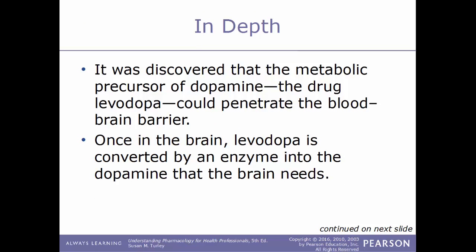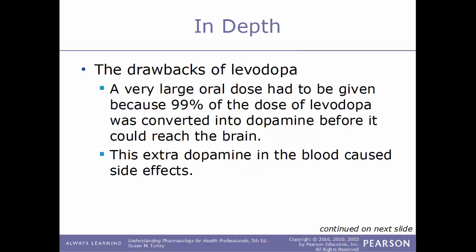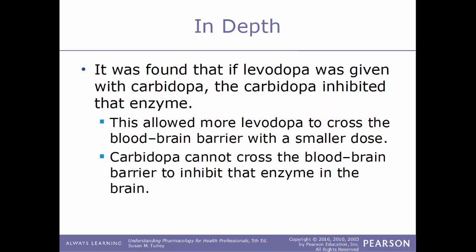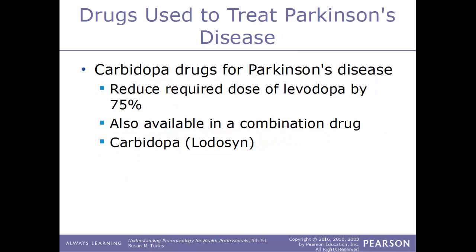It was discovered that levodopa, the metabolic precursor of dopamine, can penetrate the blood-brain barrier. Once in the brain, levodopa is converted by an enzyme into dopamine. However, a very large oral dose was required because 99% of levodopa was converted into dopamine before reaching the brain, causing side effects. When levodopa is given with carbidopa, carbidopa inhibits that enzyme in the blood, allowing more levodopa to cross the blood-brain barrier with a much smaller dose. Carbidopa cannot cross the blood-brain barrier, so it reduced the required dose of levodopa by 75%. Carbidopa is sold under the brand name Lodosyn.